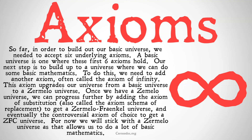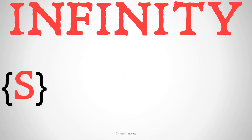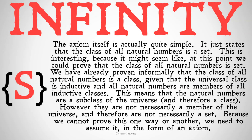For now, we're going to stick with a Zermelo universe that allows us to do a lot of basic mathematics. The axiom itself is actually quite simple — it just states that the class of all natural numbers is a set. This is interesting because it might seem like we could prove that the class of all natural numbers is a set. We've already proven informally that the class of all natural numbers is a class, given that the universal class is inductive and all natural numbers are members of inductive classes. This means that the natural numbers are a subclass of the universe, and therefore a class.